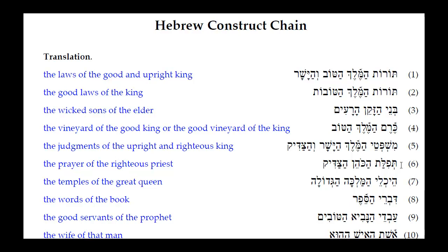Number six: Tifalat HaKohane HaSadik. We look at the adjective HaSadik — what does it agree with? The Patak Tav ending on Tifalat tells us it is feminine singular, but the adjective is masculine singular. So it cannot agree with Tifalat; it must agree with HaKohane, the priest. The Patak Tav tells us Tifalat is a feminine singular construct noun. That gives us 'the prayer of the righteous priest.'